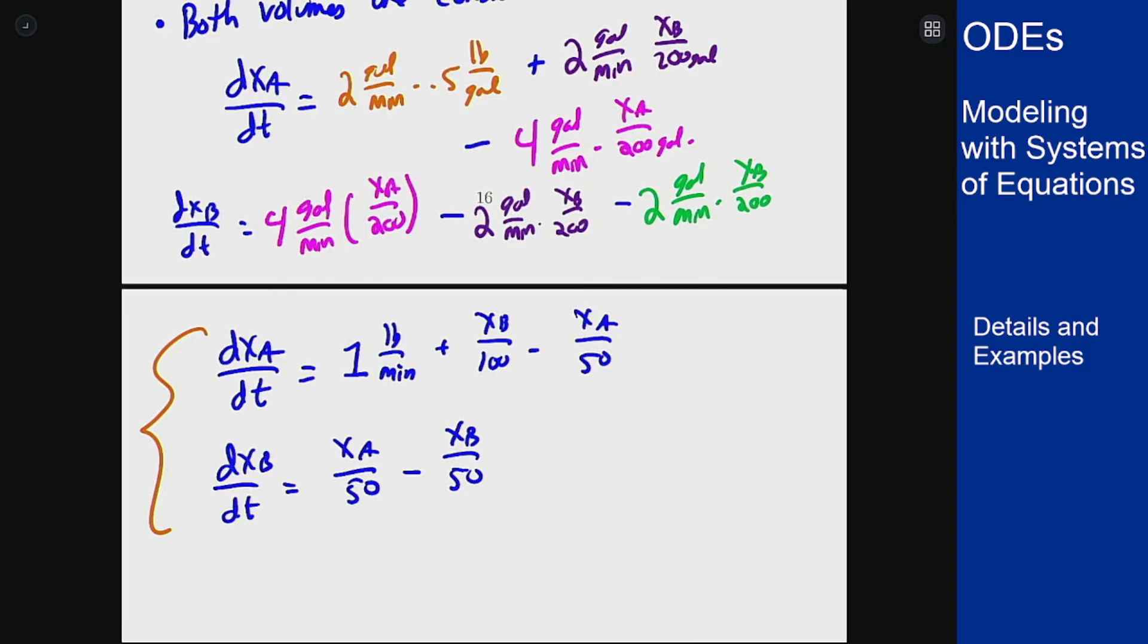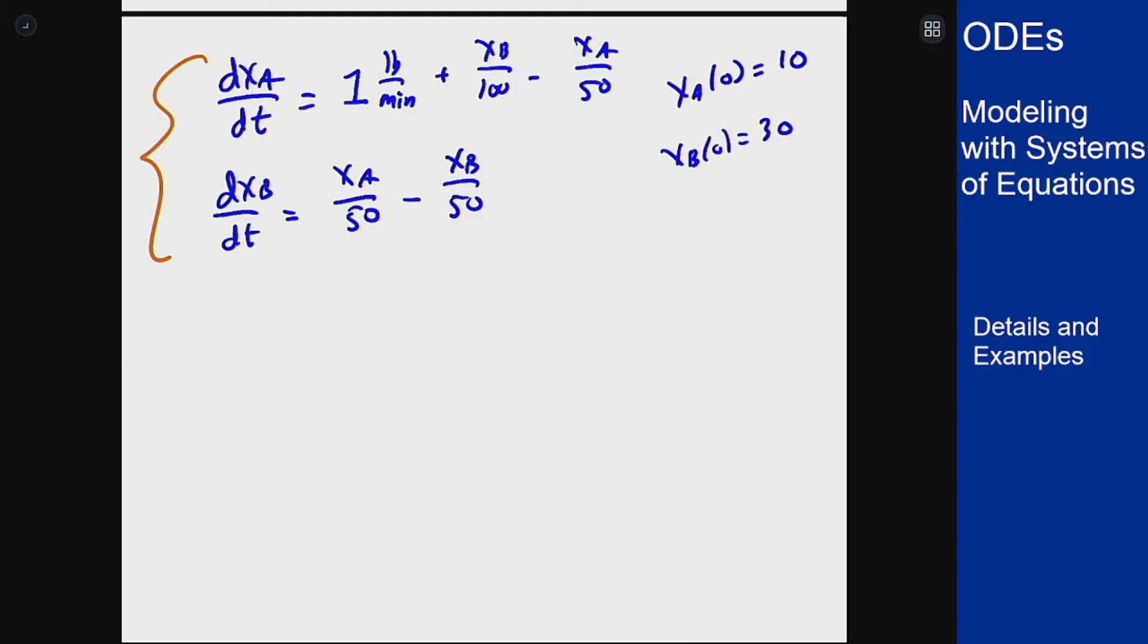It has initial condition given by XA(0) = 10 and XB(0) = 30 because we're given that at the first line of the problem statement. Now let's try to find equilibrium solutions and classify them to see what this looks like.